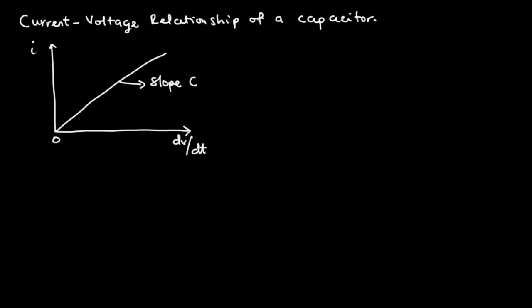In this section we are going to discuss the current-voltage relationship of a capacitor. To obtain this relationship, we first consider the equation: charge Q is equal to the capacitance C of the capacitor times the voltage V applied across it. That is our first equation. We are now going to differentiate this equation with respect to time.